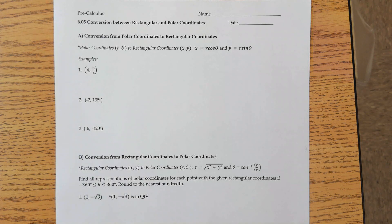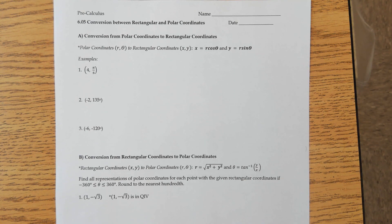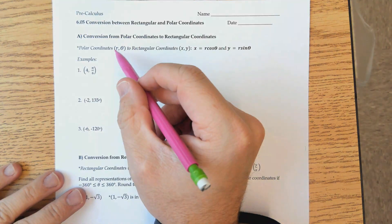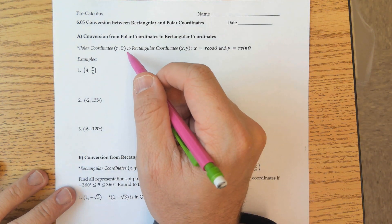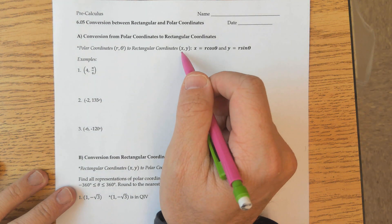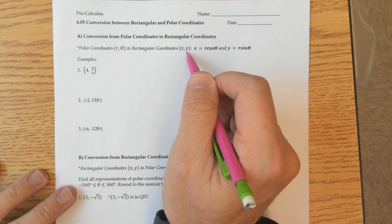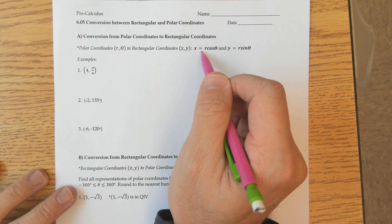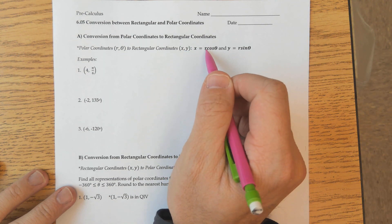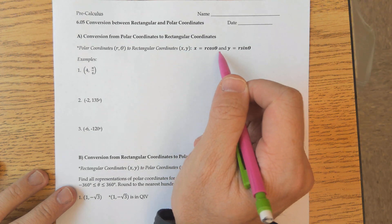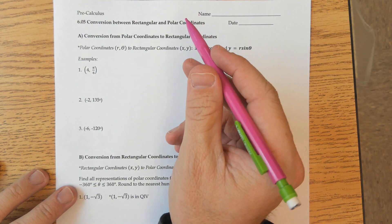Today we're going to be talking about 6.05 conversion between rectangular and polar coordinates. We're going to be going back and forth, and you're going to see a lot of similarity. Polar coordinates are in the form r theta, and rectangular coordinates are in the form x comma y. To find our rectangular coordinates, x is equal to r cosine theta and y is equal to r sine theta.